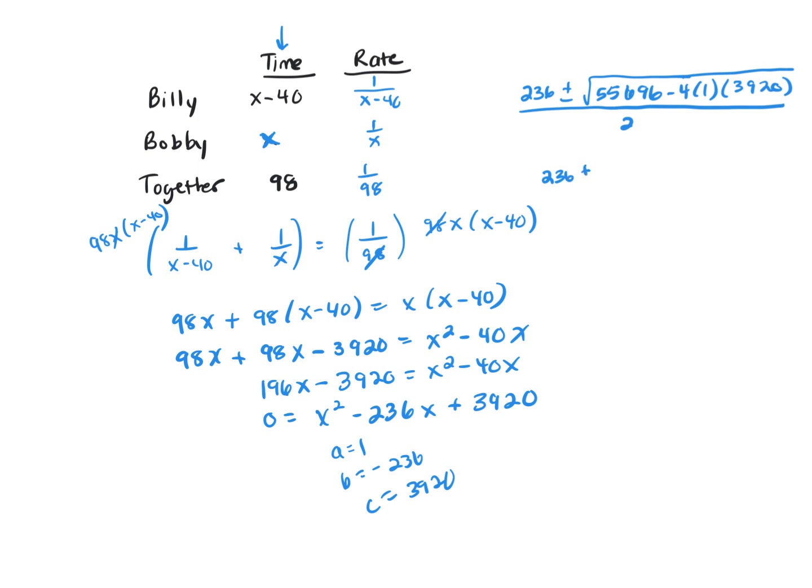So that's going to be 236 plus or minus the square root of 55,696 minus 4 times 3920. And that's 40,016, 40,016 all over 2.